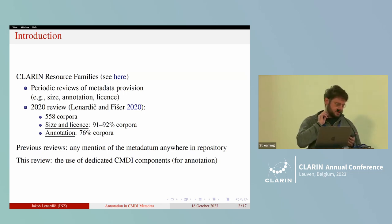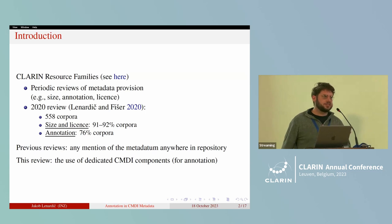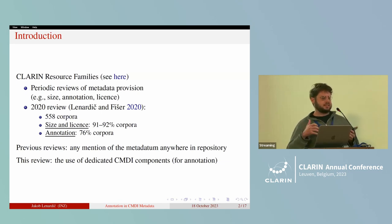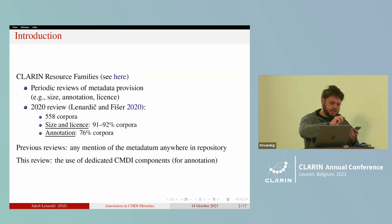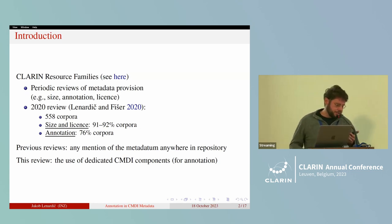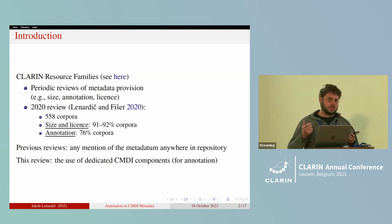In a review from 2020, when there were around 560 corpora overviewed in the CLARIN resource families, the provision of size and license was quite good — around 90% of the corpora had this information. But by contrast, metadata on annotation was missing for a significantly larger percentage of the corpora, that is for almost a quarter of them.